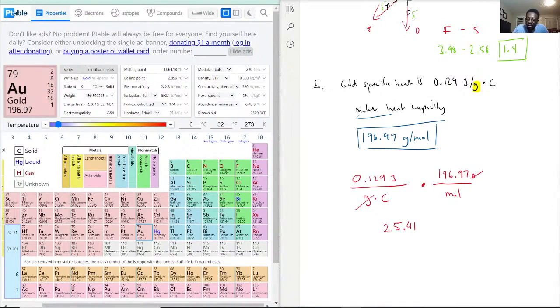What would the units be? It still has joules, still over Celsius, but now it's over moles as well. So it will be joules per mole times degrees Celsius.